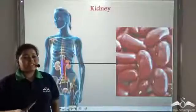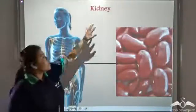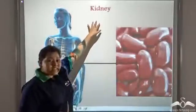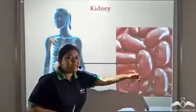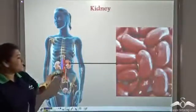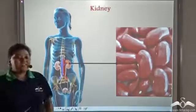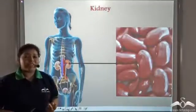This special organ present in our bodies is known as the kidneys. Kidneys are bean-shaped organs that are present on either side of the backbone. We have two kidneys in our body.